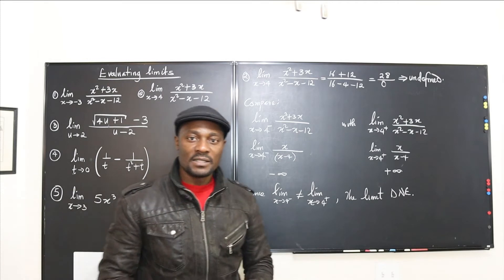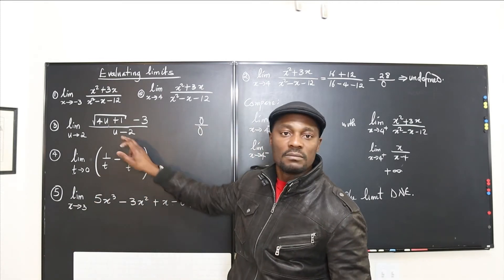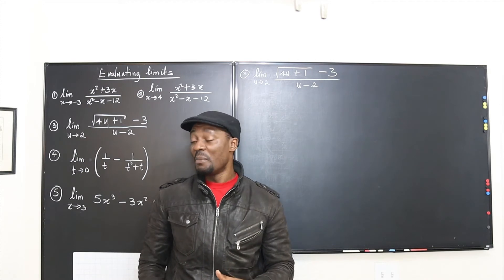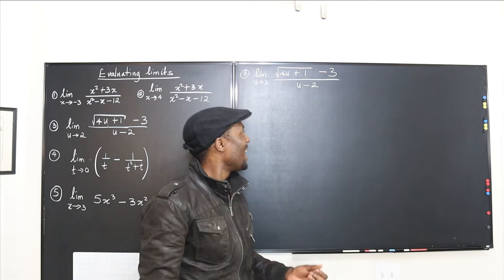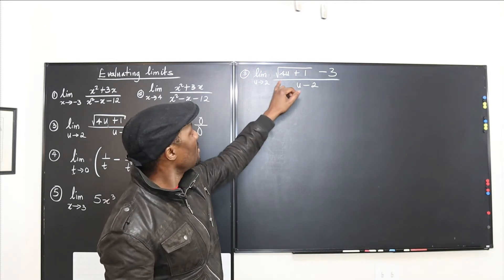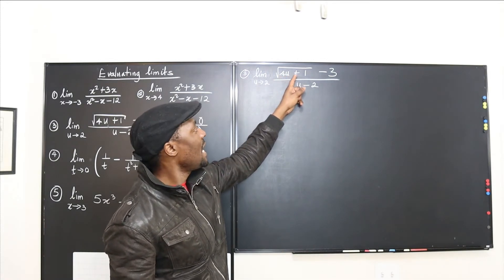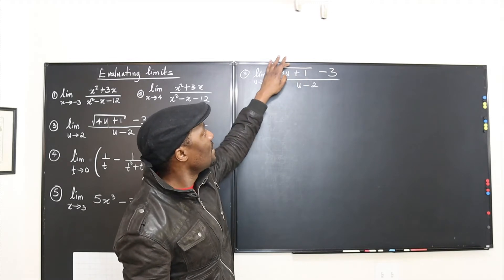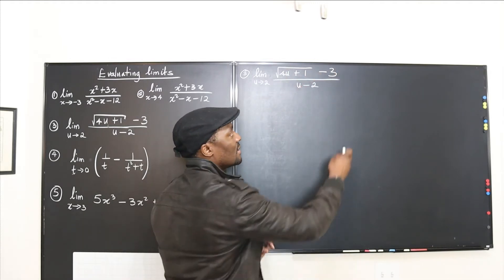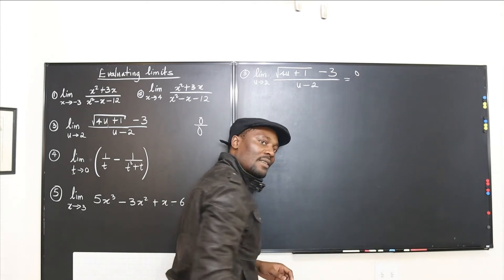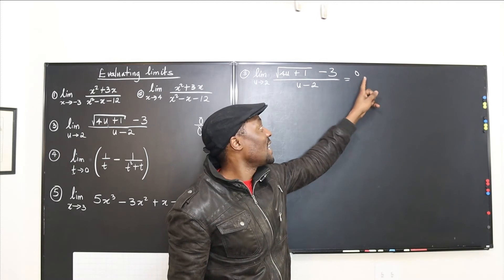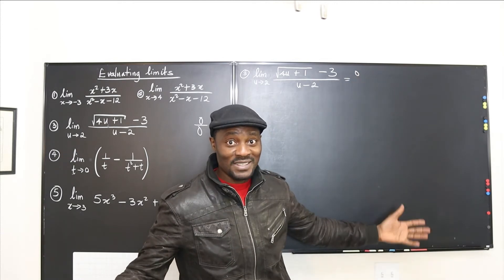Let's go to the next exercise. From what you see on the board, we'll start with direct substitution. Put 2 in: 4 times 2 is 8, plus 1 is 9, and the square root of 9 is 3. Then 3 minus 3 gives 0 on top. Then the denominator: 2 minus 2 is 0. So I have 0 over 0 — it's a yes!